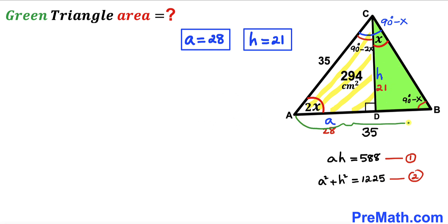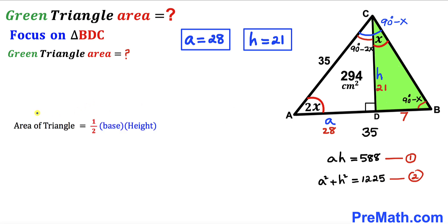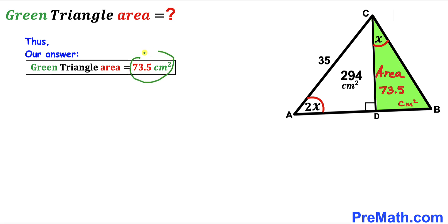The total AB length is 35 and AD is 28, so BD = 35 − 28 = 7 centimeters. For the green triangle BDC, using area = ½ × base × height with base = 7 and height = 21: area = ½ × 7 × 21 = 73.5 centimeters squared. Thus the area of the green shaded triangle is 73.5 cm².